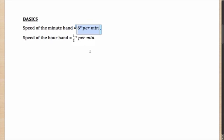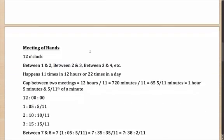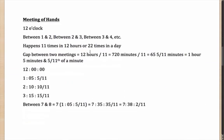We'll see how this is used in problems. But first, we need to understand the concept of the meeting of hands. The hands meet at 12 o'clock. Between 1 and 2, the hands will meet somewhere because the minute hand is faster and will complete an extra lap over the hour hand. Between 2 and 3 they will meet. Between 3 and 4 they will meet. Essentially they meet once in every gap of an hour.